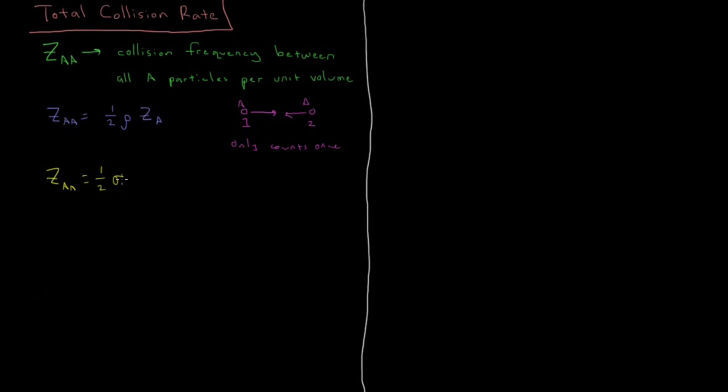So it is our cross sectional area of the particle times the average velocity of the particles relative to one another, and there is a factor of density here but there is another factor of density here so this becomes density squared.